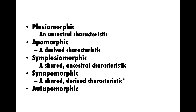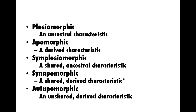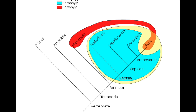Odd-apomorphic — this last one here — is an unshared derived characteristic; it's all by itself. If we look at this dendrogram again, we can say that at each of these branching points, we see a derived characteristic which unites all the members of that clade.